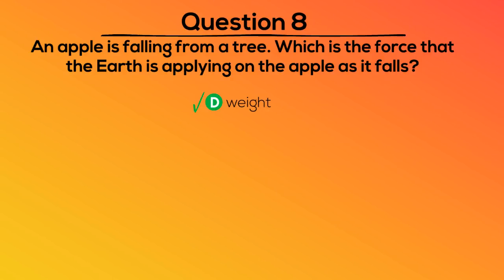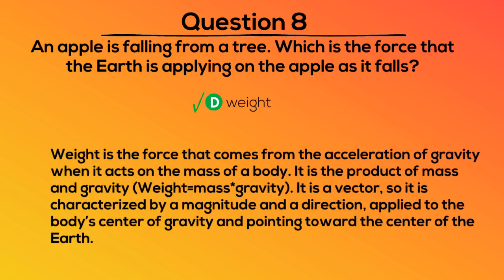The correct answer is D. Weight is the force that comes from the acceleration of gravity when it acts on the mass of a body. It is the product of mass and gravity. Weight equals mass times gravity. It is a vector, so it is characterized by a magnitude and a direction applied to the body's center of gravity and pointing toward the center of the earth.